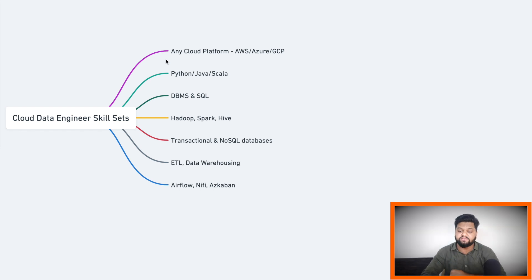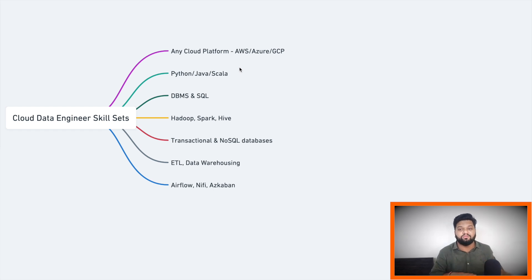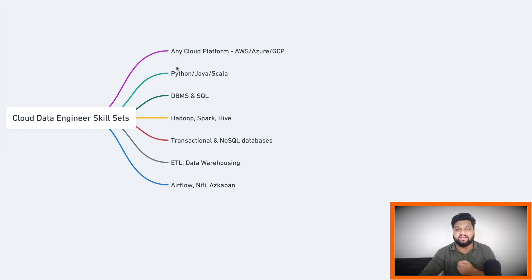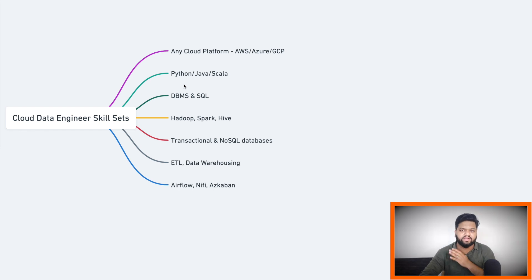For the cloud data engineer, first you obviously need a good understanding of any cloud platform — it can be AWS, Azure, or GCP — and the services you focus on should be related to big data processing, making them helpful for creating data pipelines. Second, a very important part: understanding of programming and basic data structures and algorithms. In cloud data engineering, the three popular languages are Python, Java, and Scala.